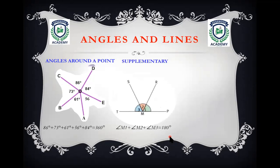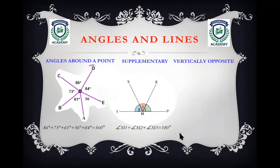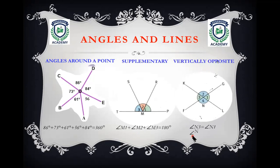Supplementary angles add up to 180 degrees, and one example is angles on a straight line. Take for example point TMP — angle M1 plus M2 plus angle M3 is equal to 180 degrees.